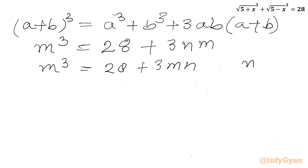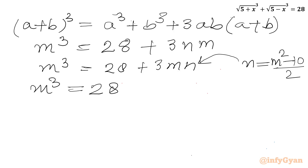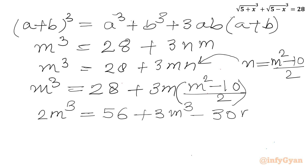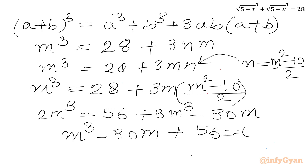Our n was m squared minus 10 over 2. Substituting this value and multiplying through by 2 gives 2m cubed equal to 56 plus 3 times m cubed minus 30m, which simplifies to m cubed minus 30m plus 56 equal to 0.